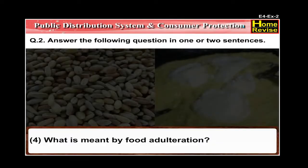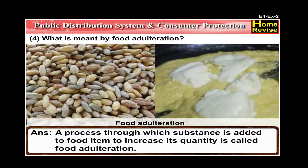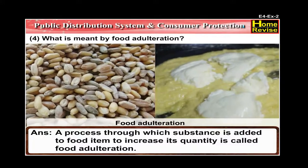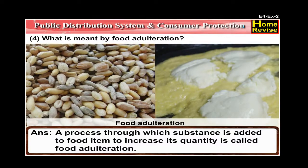Number 4: What is meant by food adulteration? The answer is: a process through which a substance is added to a food item to increase its quantity is called food adulteration.